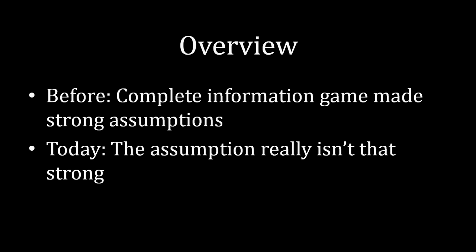But actually, what we're going to see today is that the assumption isn't nearly as strong as it seems. In fact, a complete information game closely approximates what an incomplete information game looks like, a situation where Albert doesn't know Barbara's outside option, as long as he has a very good idea what that outside option is.